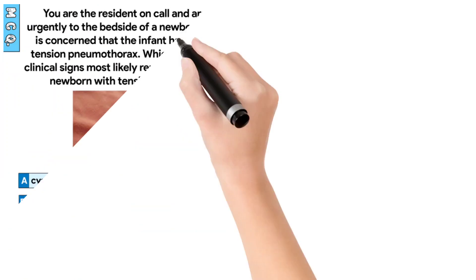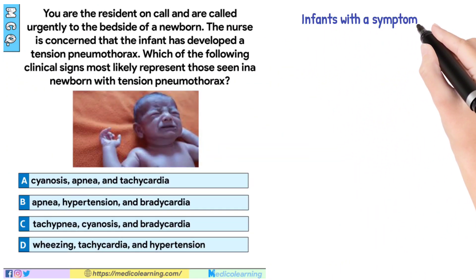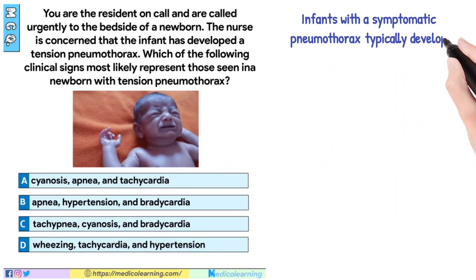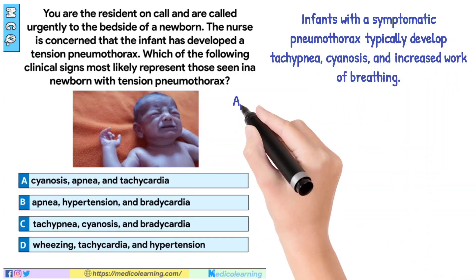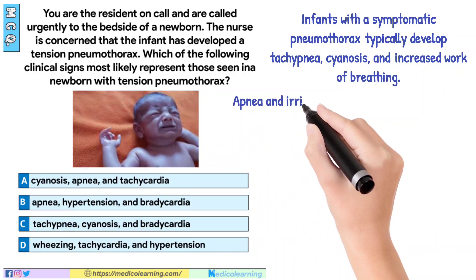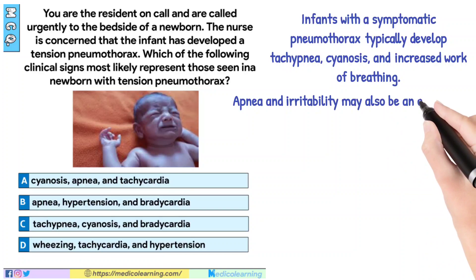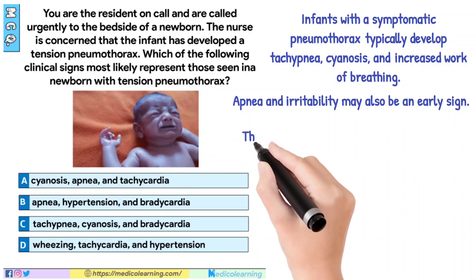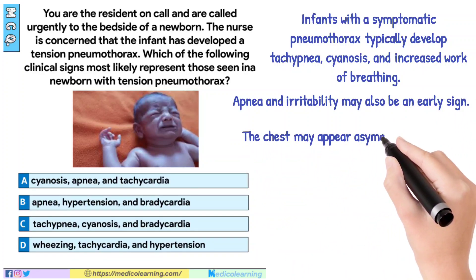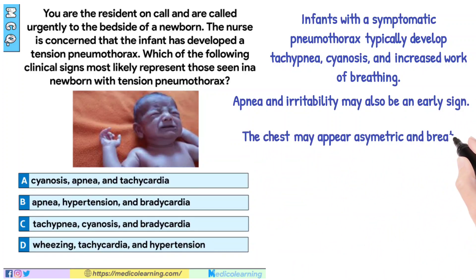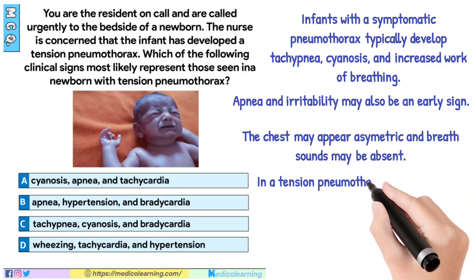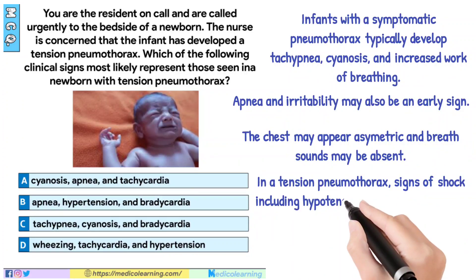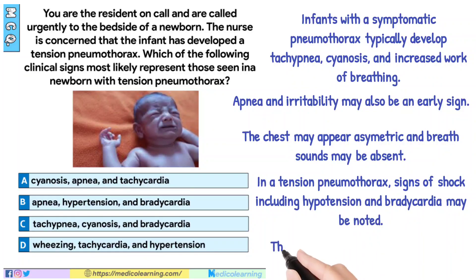Infants with a symptomatic pneumothorax typically develop tachypnea, cyanosis, and increased work of breathing. Apnea and irritability may also be an early sign. The chest may appear asymmetric and breath sounds may be absent. In tension pneumothorax, signs of shock including hypotension and bradycardia may be noted. The heart apex is shifted away from the affected side. Prompt diagnosis and treatment is needed.